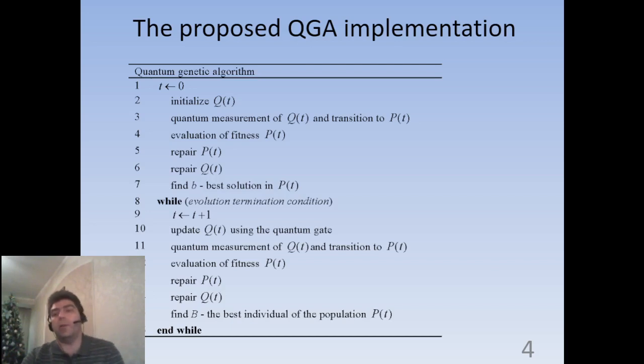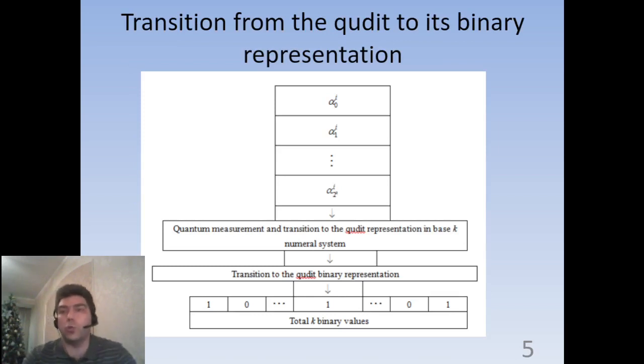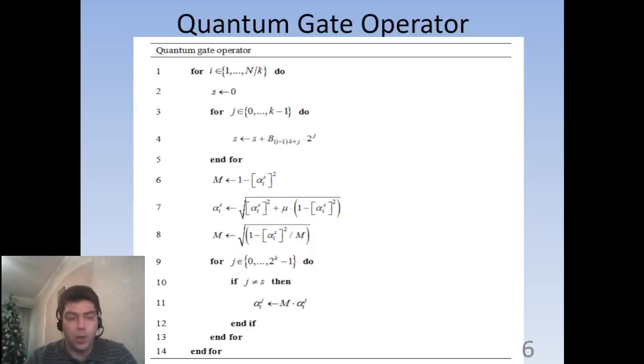So the main idea of our improvement of quantum genetic algorithms is that we propose to use multilevel quantum logic instead of traditional binary logic. The overall structure of the proposed quantum genetic algorithm is shown in this picture. And in the next picture, we show the transition procedure from the q-dit to its binary representation. The use of q-dit representation requires new algorithms of basic quantum operators.